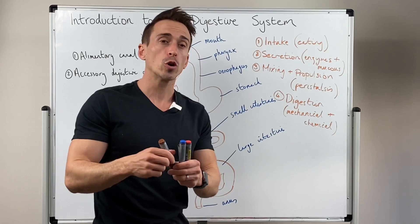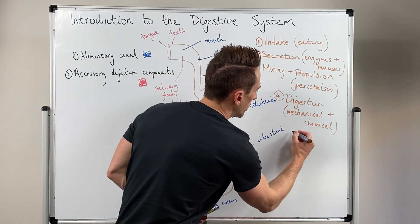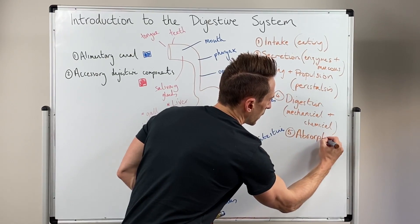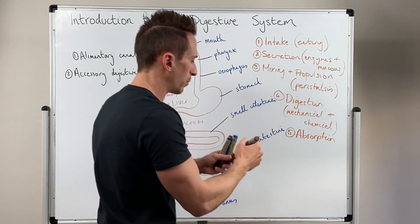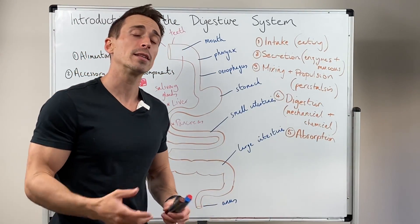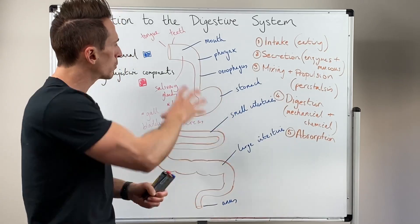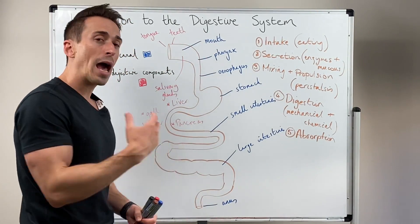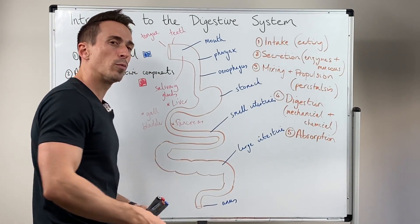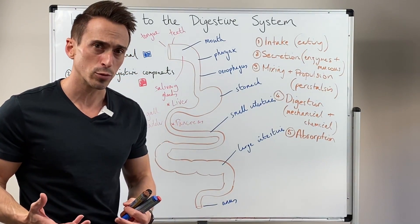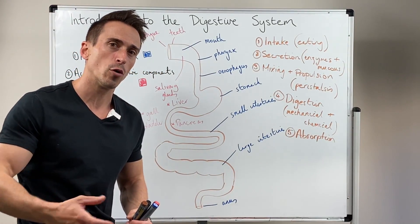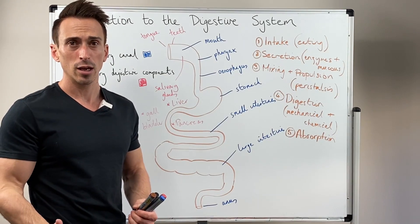Number five is that of absorption. Once we've broken these things down we need to absorb them. They're absorbed into the bloodstream — well, most of them are. Some, like fats, are absorbed into the lymphatic system. Different substances are absorbed at different areas of the tract. For example, alcohol can be absorbed at the stomach. The small intestines are one of the primary sites for absorption when it comes to nutrients, but the large intestines are a really important site for vitamins, water, and electrolyte absorption.